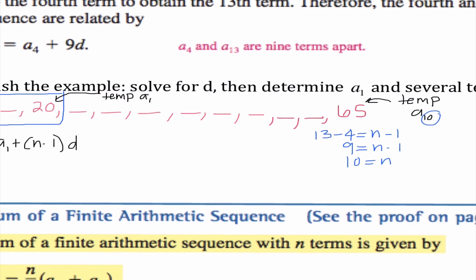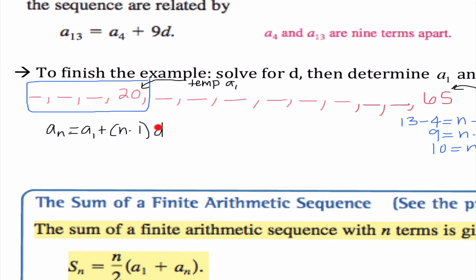I'm calling these temporary values because that's what's going to help me figure out our common difference, then we can work backwards. I'm going to say 65, because that is our temporary 10th term, equals our temporary first term is 20. Since 65 is our 10th term, I'm going to do 10 minus 1 times d. So I get 45 equals 9d, so 5 is our common difference. If I want to move backwards, I can subtract. So I have 20. If I subtract 5, I would get 15, 10, and our first term would be 5.